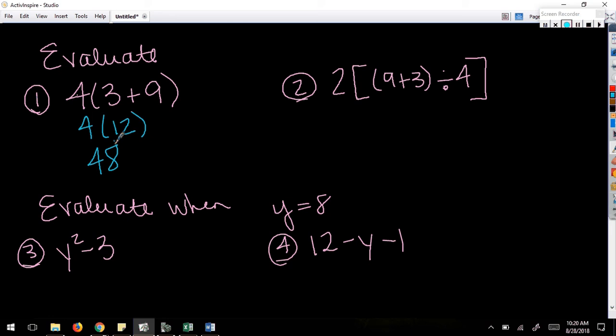Number two. Parentheses, but I have parentheses in brackets here. What should I do first? The innermost parentheses. So I've got two times, what's nine plus three? 12. What do I do now? 2(12-4), which is 2(8) = 16. Y'all got this.